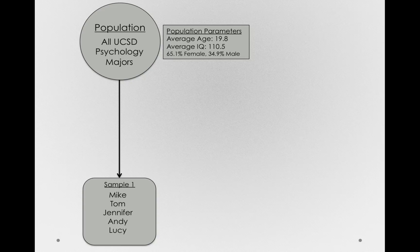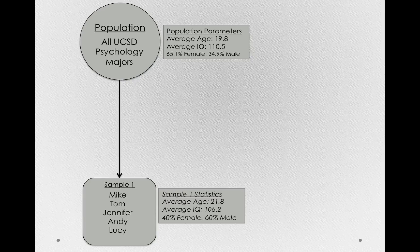Suppose I calculate the same statistics. So I find the average age in sample one, it's 21.8. I find the average IQ, 106.2. And in this sample, notice we have 40% female and 60% male.